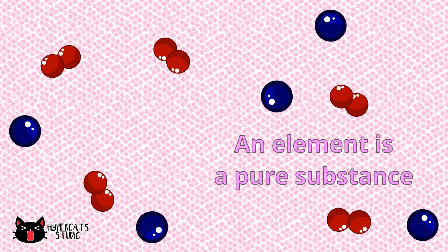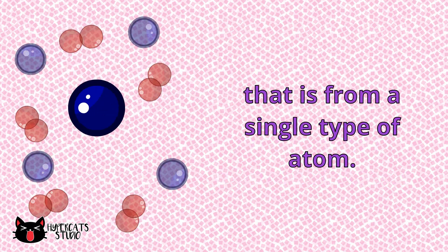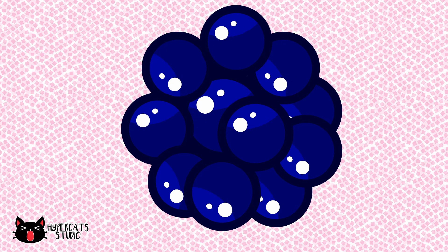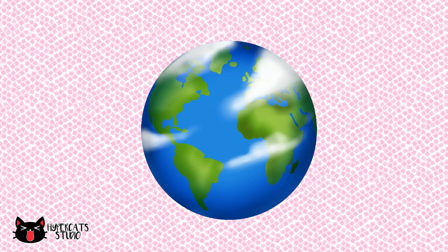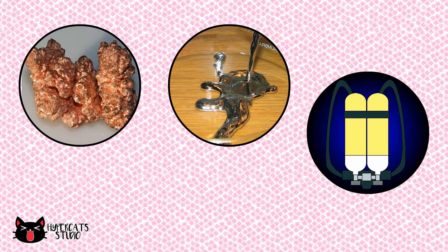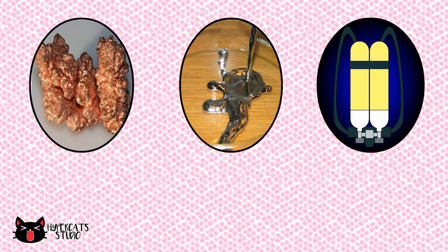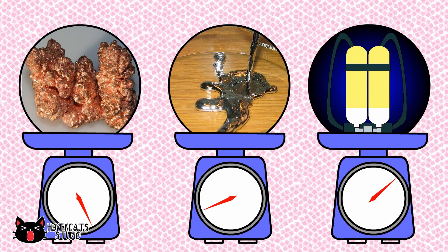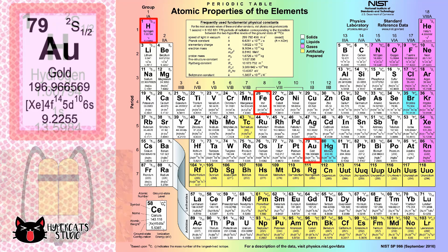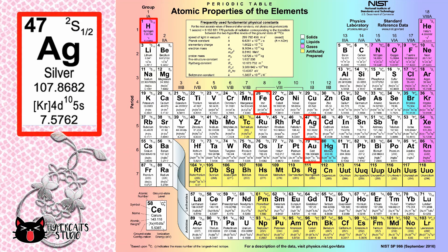An element is a pure substance made from a single type of atom. It is the building block of all matter in the world. An element can be in different forms like solid, liquid, or gas, and differs in shapes and weight depending on the number of atoms present.